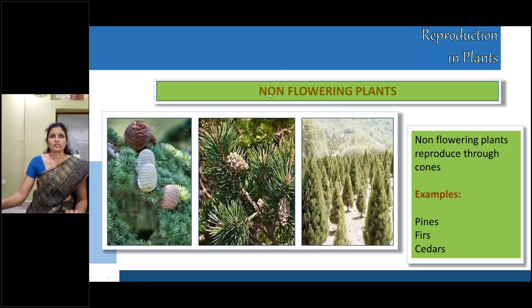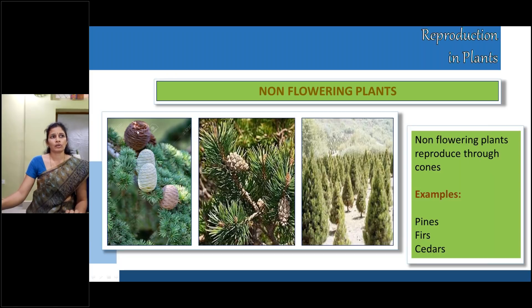Non-flowering plants: see the pictures. What you are seeing here is a special structure called cones. These plants do not have flowers; they have a special structure called a cone and they reproduce through this. The seeds are inside these cones. Non-flowering plants reproduce through cones. Examples: pines, firs, and cedars.